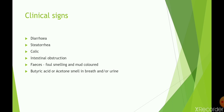Clinical signs include colic, intestinal obstruction, constipation, and feces with a foul smell. In the breath there may be a rancid butter or butyric acid odor, and sometimes an acetone-like smell, which can also be noticed in the urine or in both breath and urine.